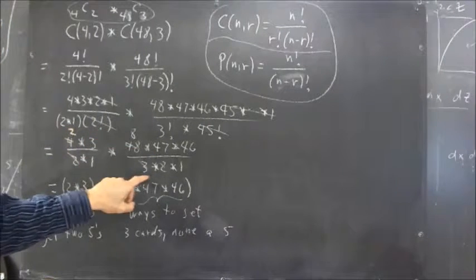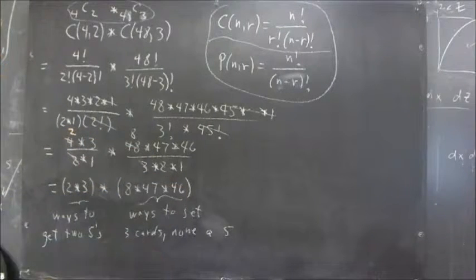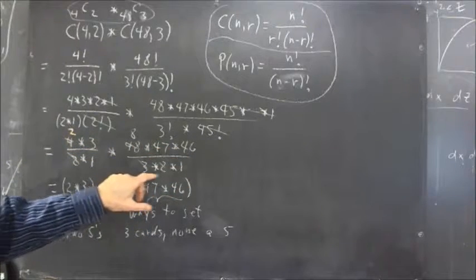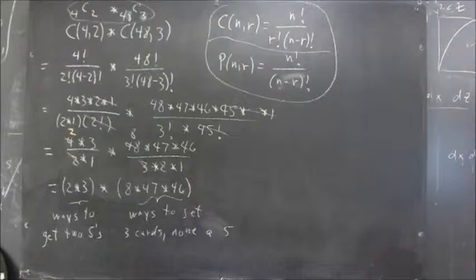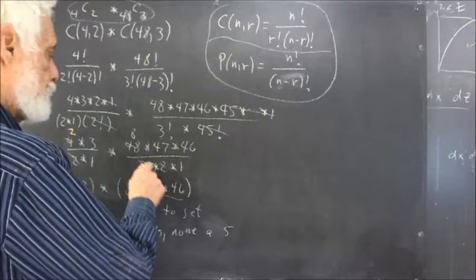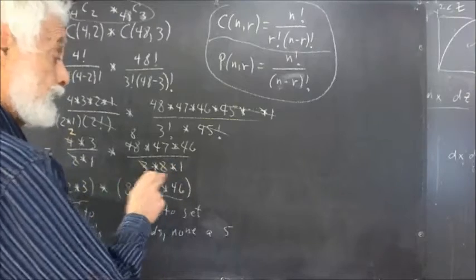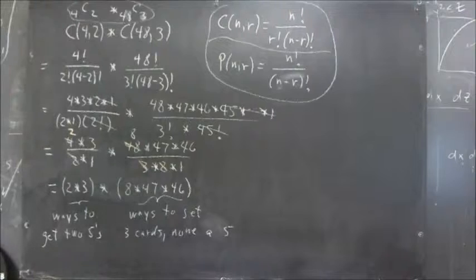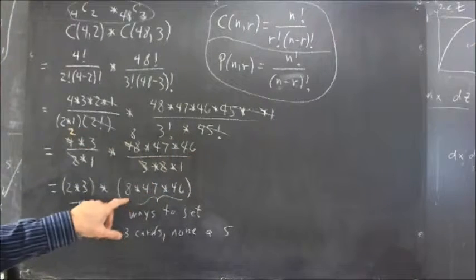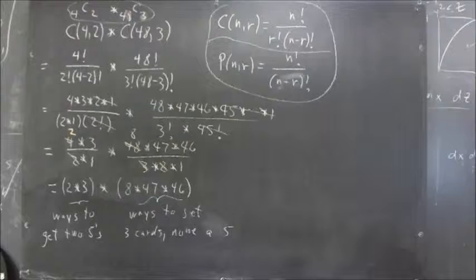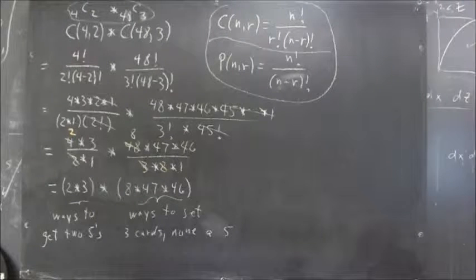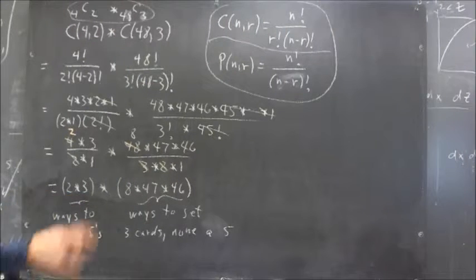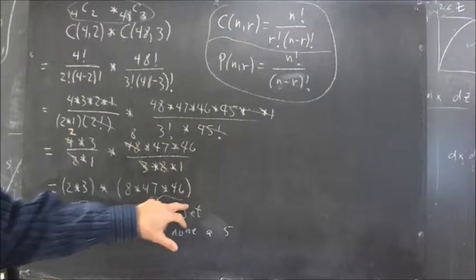We end up with 48 times 47 times 46 divided by 3 factorial. And 3 factorial is 3 times 2 times 1. So, we end up with 48 times 47 times 46 divided by 3 times 2 times 1. The 3 times the 2 is 6, which divides into 48 8 times. So this calculation ends up 8 times 47 times 46. The whole calculation reduces down to 2 times 3 multiplied by 8 times 47 times 46.